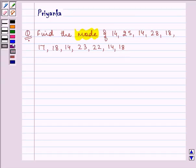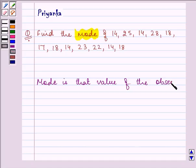So before proceeding with the solution we should be well versed with what a mode is actually. Mode is that value of the observation which occurs frequently.